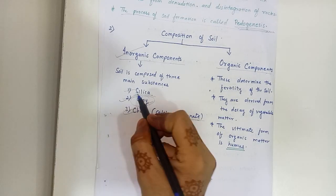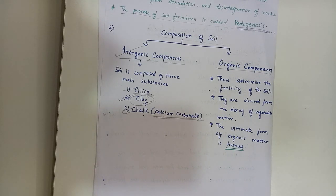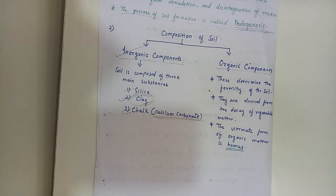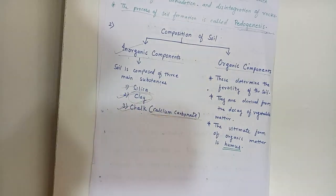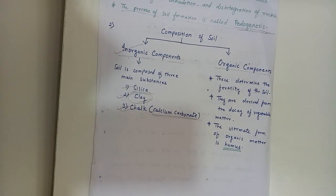Clay is a mixture of silicates and many other minerals such as iron, calcium, sodium, potassium, and aluminium. Clay soil retains moisture — it contains moisture. Chalk provides the most essential element for plant growth, which is calcium.